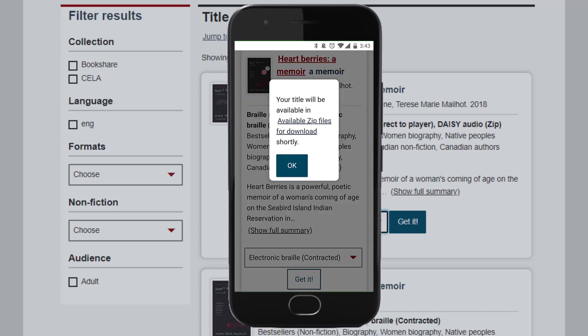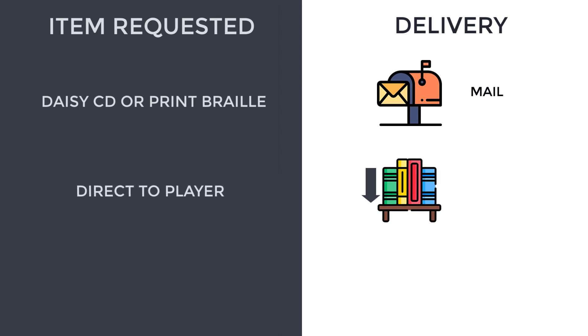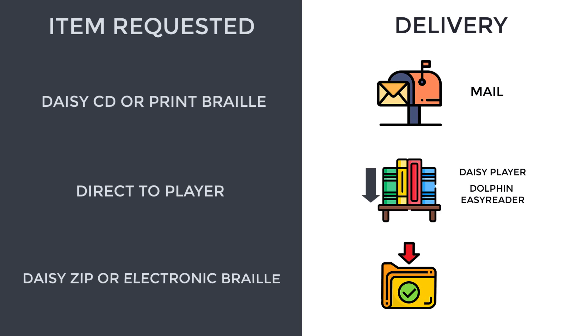A pop-up will appear confirming that you will receive the item. If you selected a DAISY CD or print braille, it will be sent in the mail to you. If you selected a direct-to-player format, it will be placed on your direct-to-player bookshelf, which you can access using any device you have set up for direct-to-player, such as a DAISY player or the Dolphin Easy Reader app. If you selected a ZIP format, such as DAISY ZIP or electronic braille, you need to go to my account to download it.